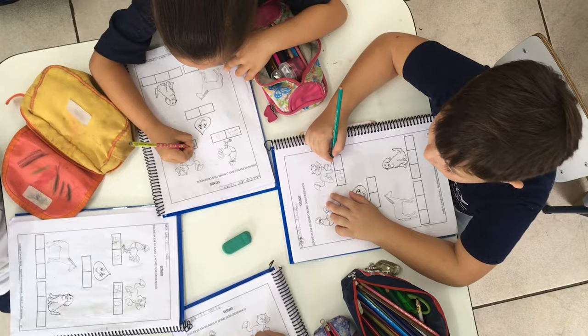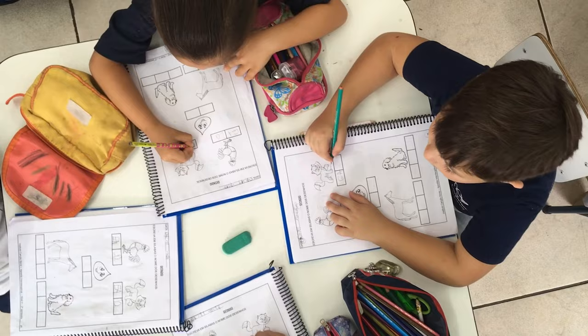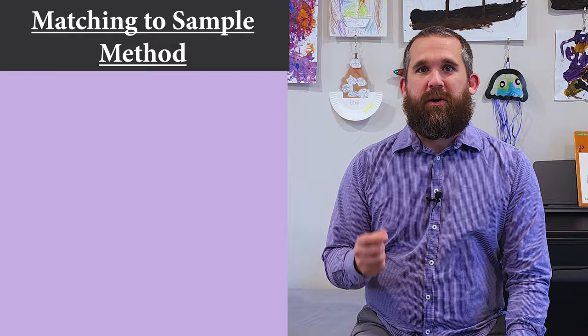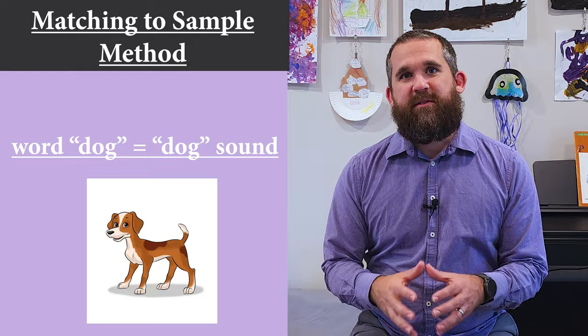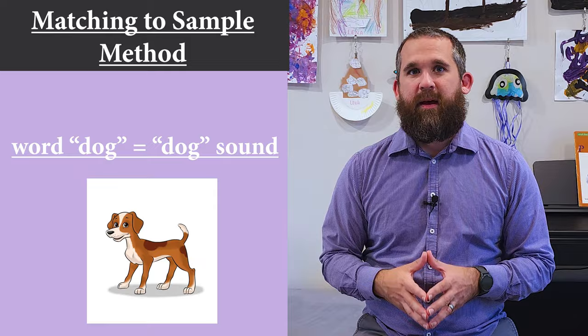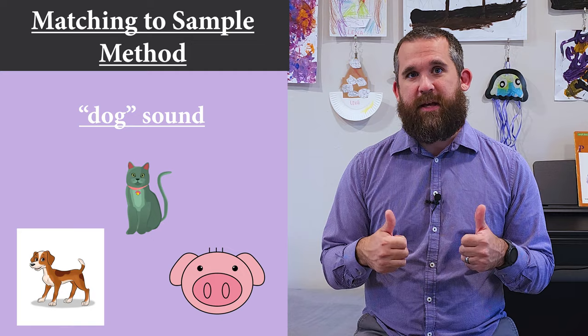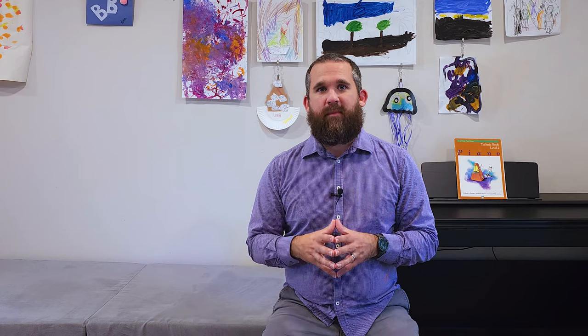The story of RFT starts in an unexpected place: learning how to read. Back in the 1970s, a group of American psychologists led by Murray Sidman were studying how people with learning difficulties were taught to read by making connections. They used a simple method called matching-to-sample to see how individuals link words like 'dog' with the letters D-O-G to a picture of a dog. This method is like a game where you learn to pick one thing you see versus another — imagine someone hears the word 'dog' and has to choose between pictures of a dog, a cat, and a pig.